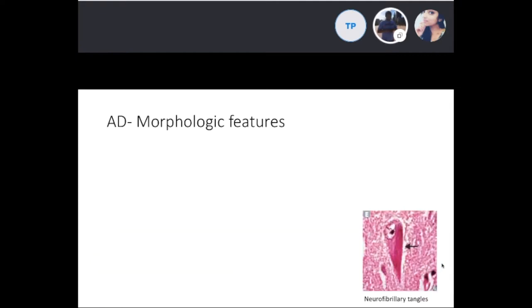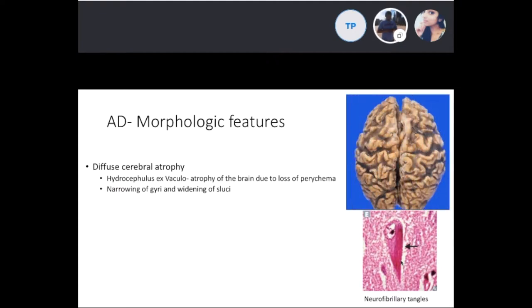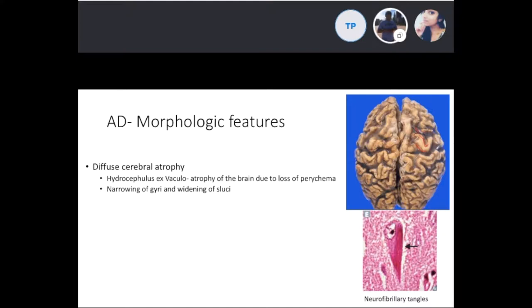Morphologically, you get diffuse cerebral atrophy. You can see narrowing of the gyri and widening of the sulci, which leads to hydrocephalus ex vacuo — that's due to the loss of parenchyma around the brain.